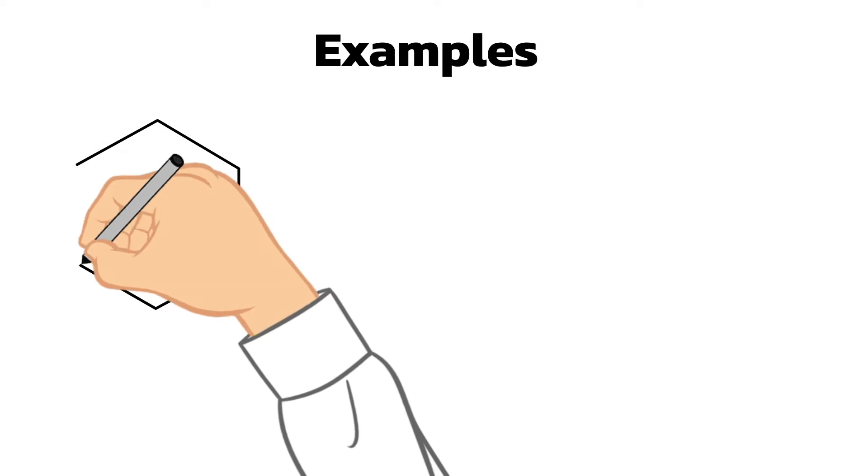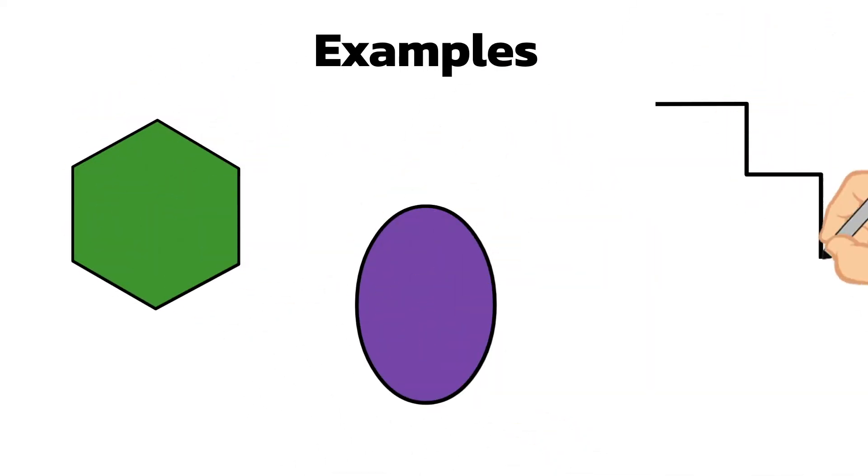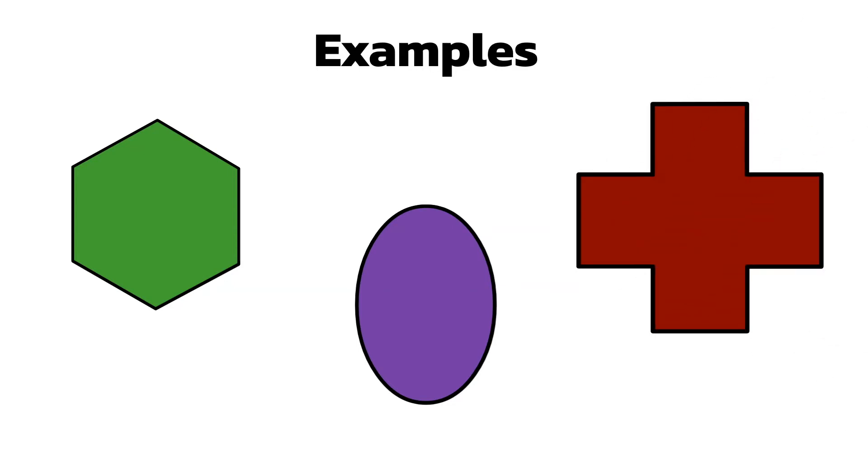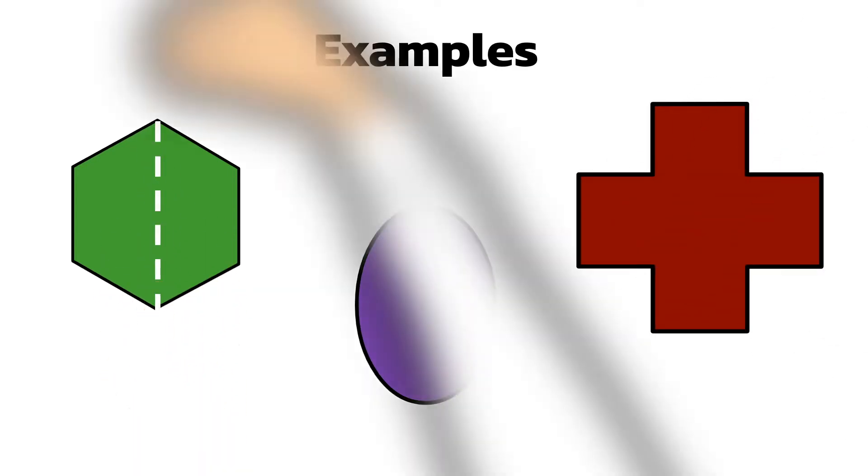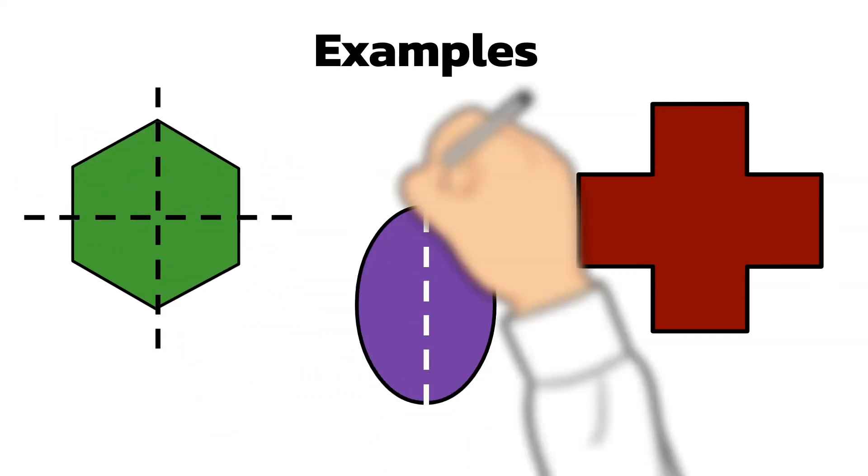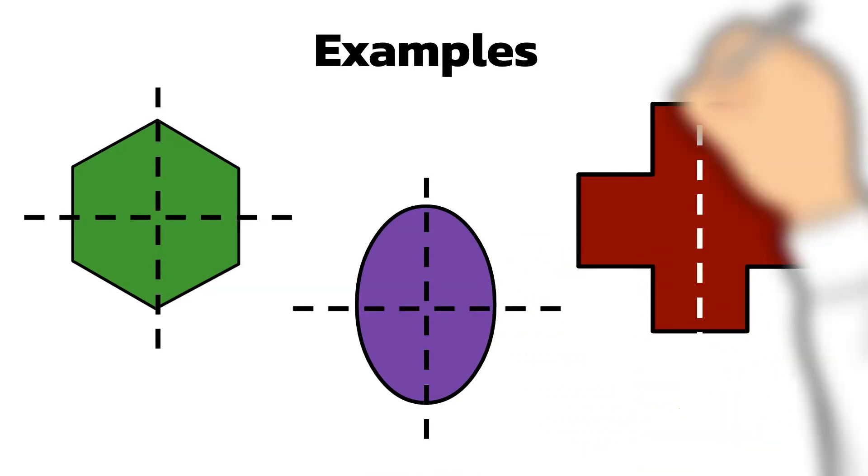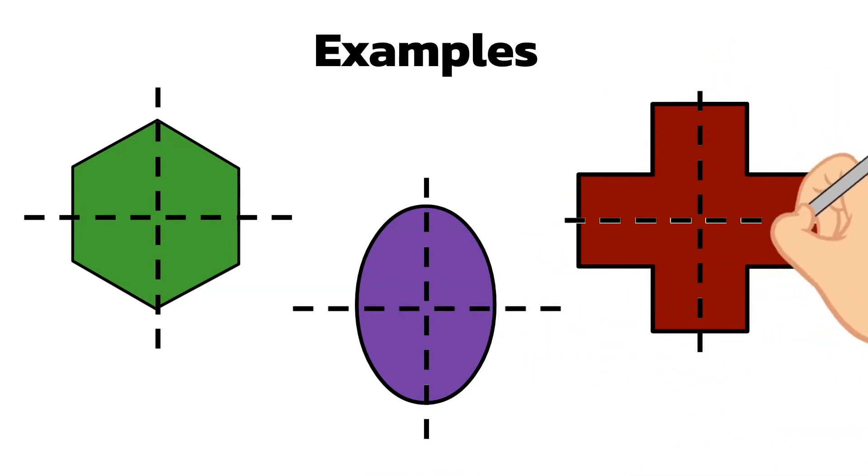Draw these shapes and mark on at least two lines of symmetry for each. The position where the lines of symmetry cross is the center of mass of the shape. I've only marked two lines of symmetry for each shape, but there are many more, and they all go through the same point.